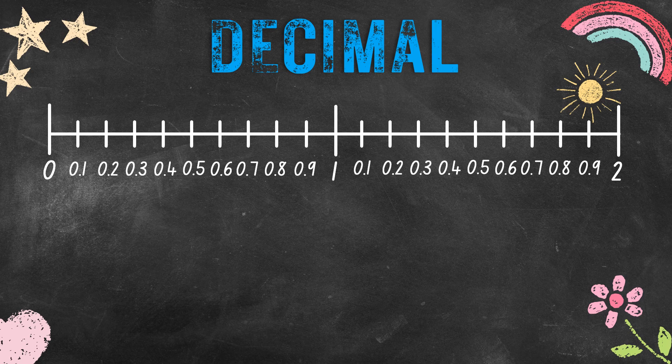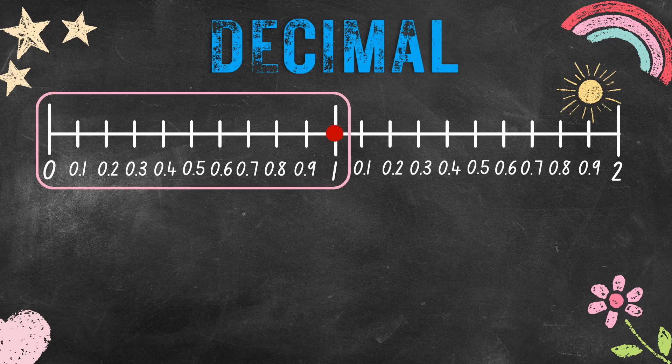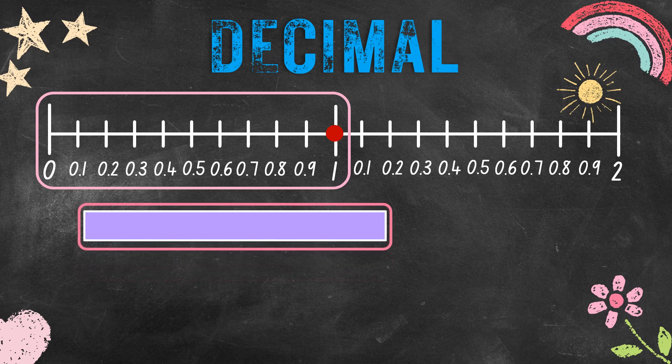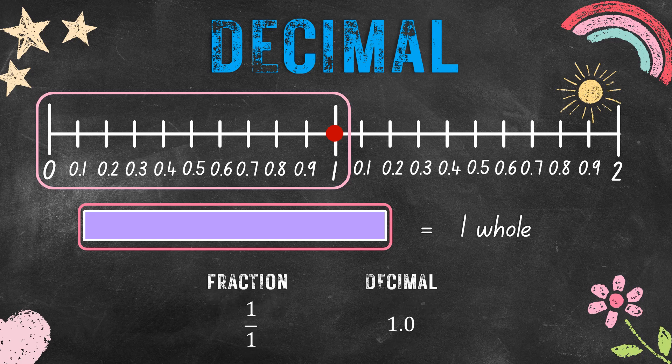This time, let's focus on just 1 — as in 1 whole, from 0 to 1. Let us show an illustration that represents 1. This is equivalent to 1 whole. In fraction, that is written as 1 over 1, but in decimal, that is 1.0. They are just the same — fractions and decimals are the same, just written differently.